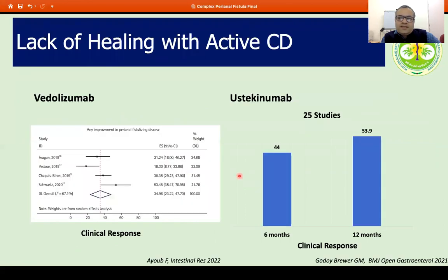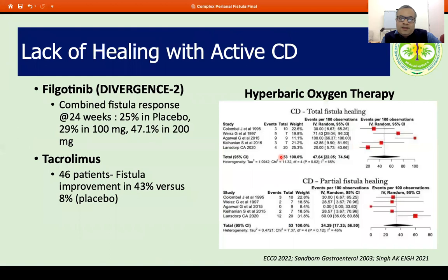If there is a lack of healing in the presence of active IBD, this may be a case to change biologics. There is emerging data suggesting that vedolizumab may be useful in CD-related perianal fistula — the ENTERPRISE trial showed healing in almost 50% of patients, and in a recent meta-analysis, full response was around 35%. For ustekinumab, clinical response in a systematic review of 25 studies was 44% at 6 months and around 54% at 12 months. Other options include filgotinib, which is not yet available in India but has data presented at a recent ECCO conference. There is also data for tacrolimus and observational data for hyperbaric oxygen.